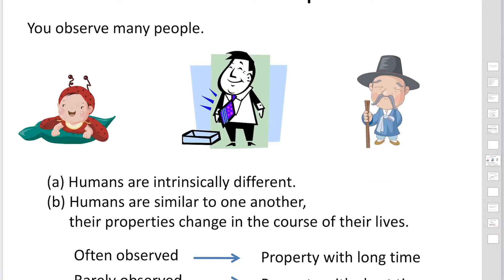Also, we could observe a number of people, a number of human beings. Sometimes like a baby, or most people belong to this. And then also some old people have a problem in the leg, then they start using canes.